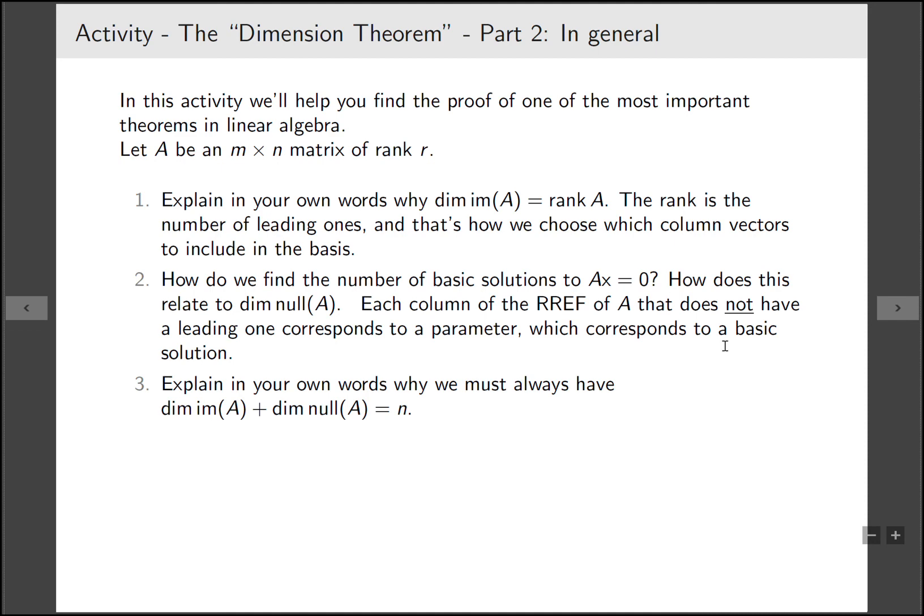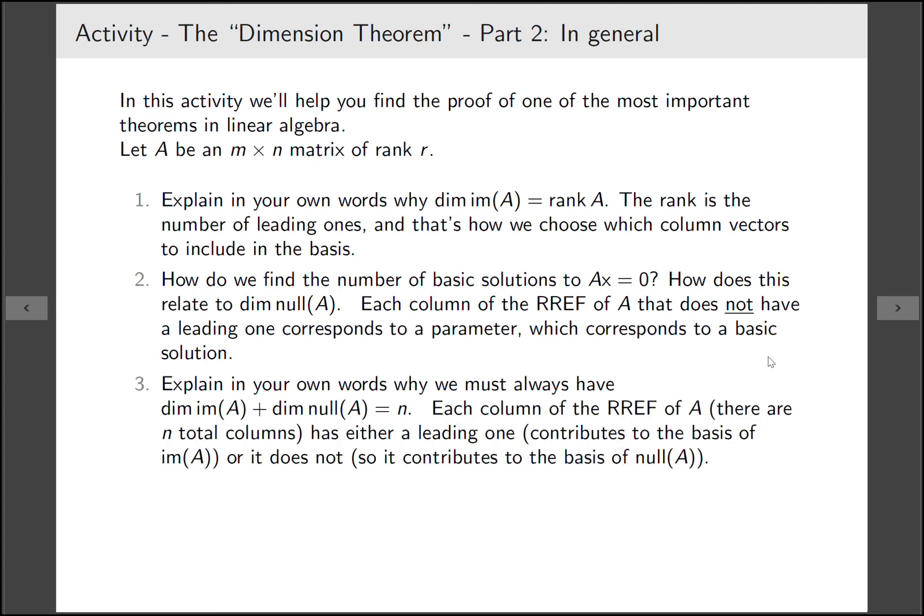So now we're ready to connect the dimension of the image of A and the dimension of the null space of A and n. So why is it that when you add these two things up you get n? One way to think of this is how can we partition n into two pieces. So each column of the reduced row echelon form of A, there are n total columns. It either has a leading one or it doesn't have a leading one. If it does have a leading one, that contributes exactly one to the dimension of the image of A. If it doesn't have a leading one, that contributes exactly one to the dimension of the null space of A.